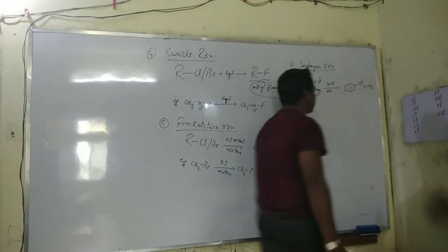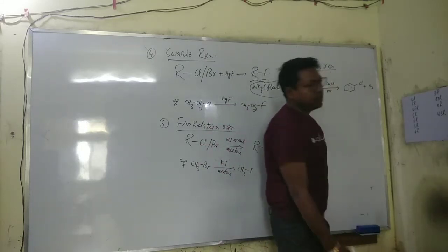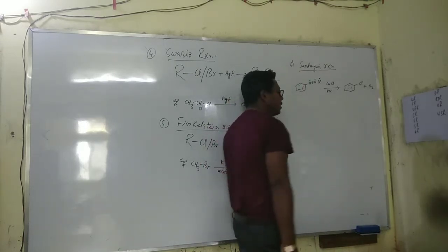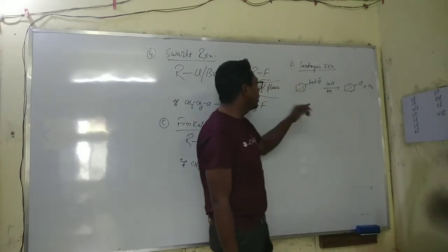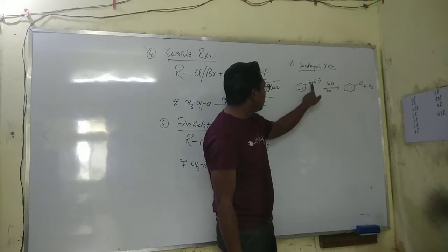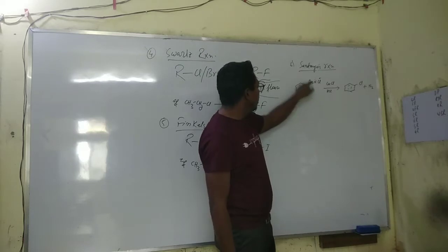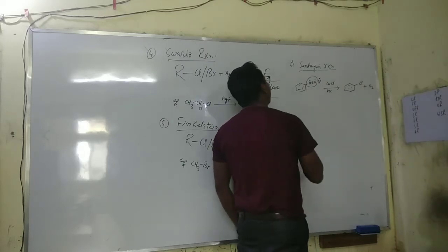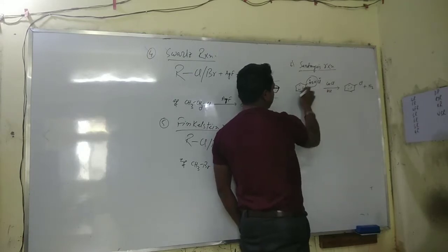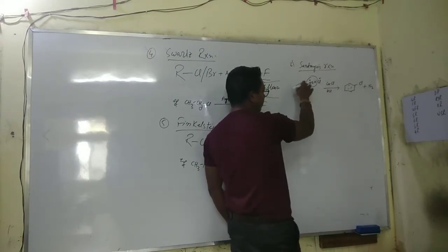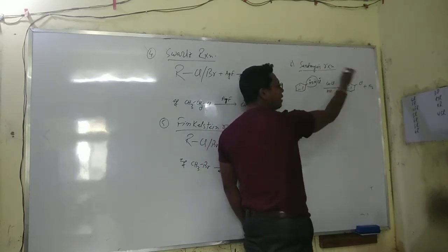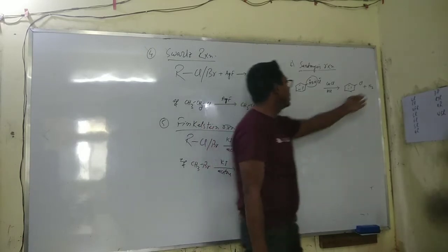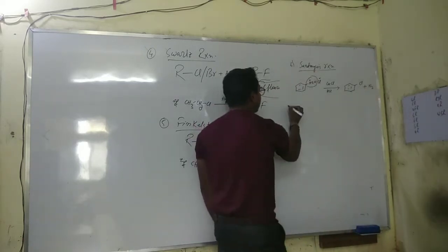Along with chlorobenzene, N2 gas is also evolved. This reaction is a type of nucleophilic substitution reaction. In benzene, nucleophilic substitution is very difficult, but here the diazonium group — the nitrogen atom directly attached to the benzene ring — carries a positive charge, making it a very good leaving group. It withdraws electrons from the benzene ring, creating an electron deficiency, so Cl⁻ as nucleophile can easily attack the carbon to displace the nitrogen.